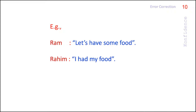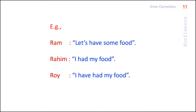Then Rahim said, 'I had my food,' while Roy said, 'I have had my food.' Anyway, all three entered into the restaurant and Ram ordered food for two — one of course for himself, but the other for whom?